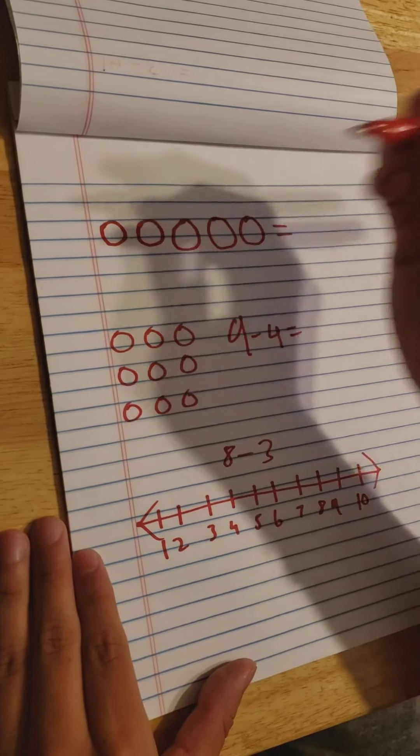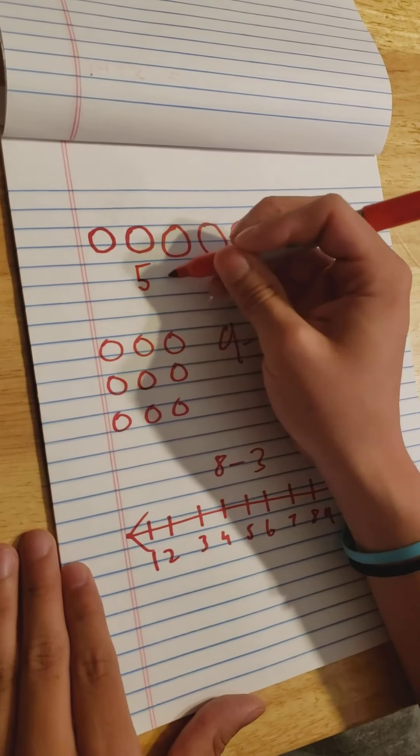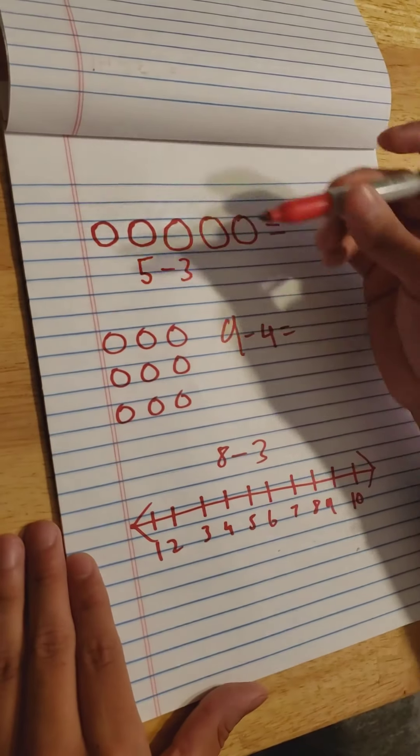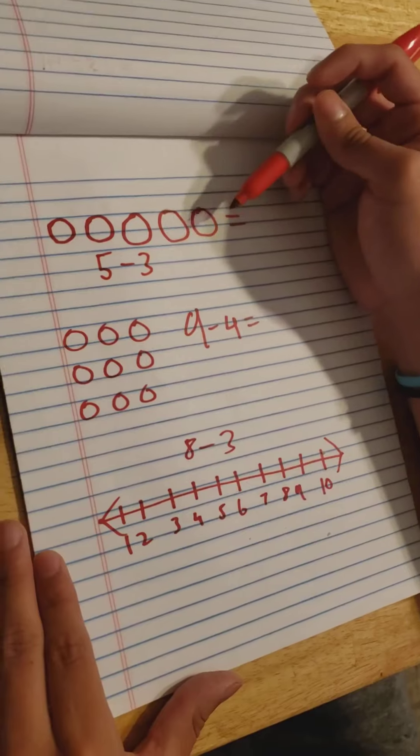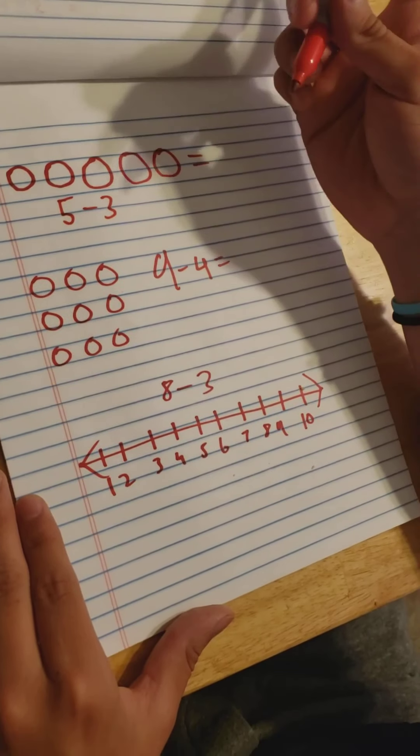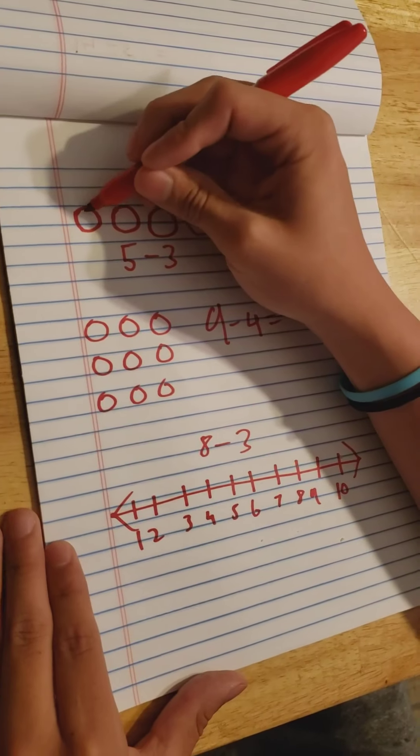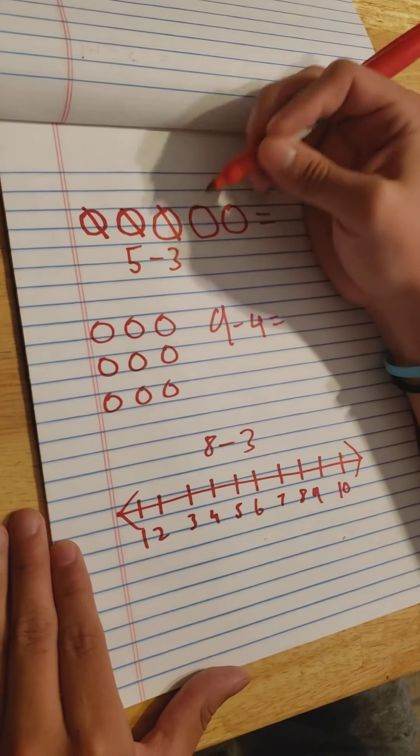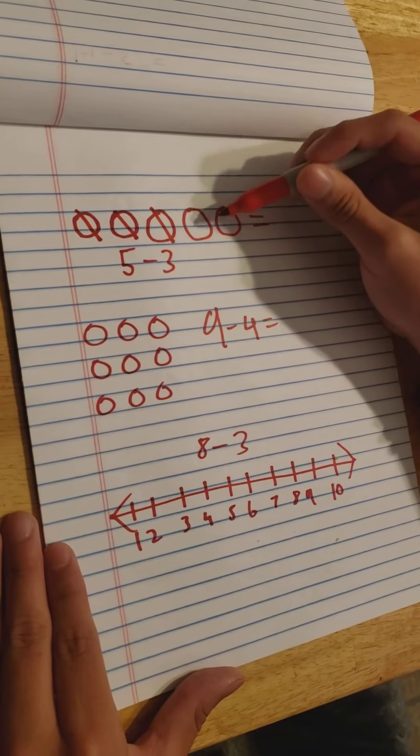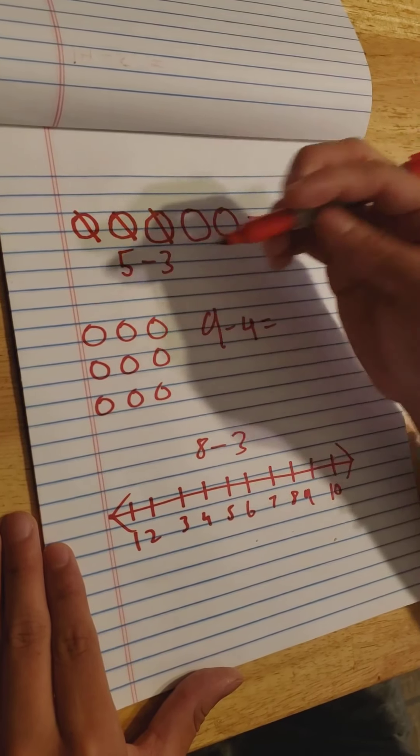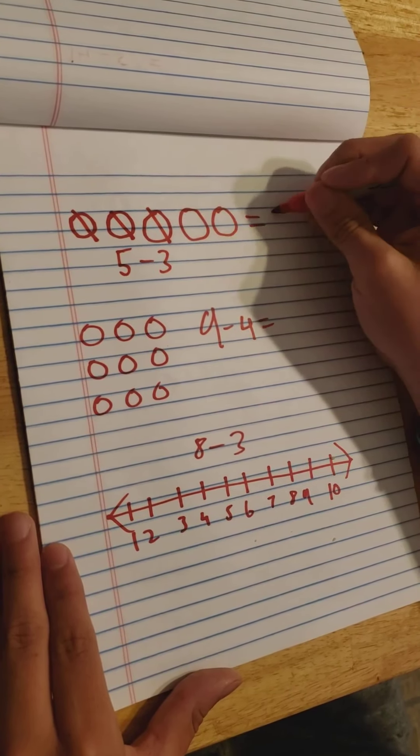So what we can do is a subtraction problem, 5 minus 3. We see there's 5 objects and if we take away 3 of those objects, let's see what we would get. If we take away 1, 2, and 3, we see that there's 2 objects left over. Therefore we know our answer would be 2.